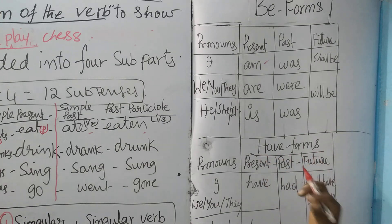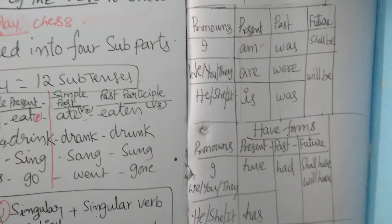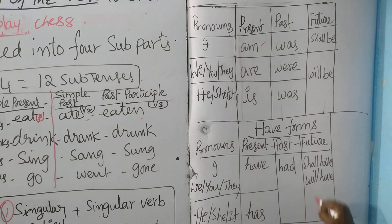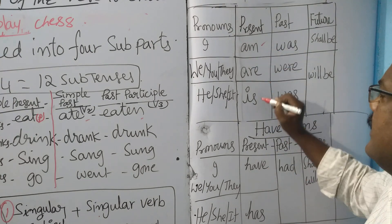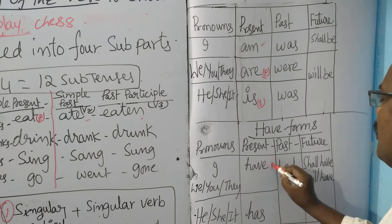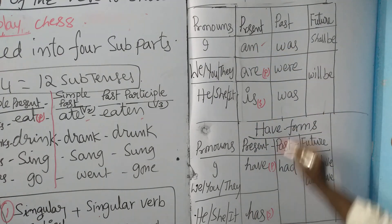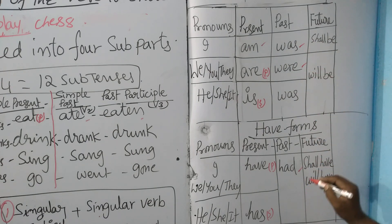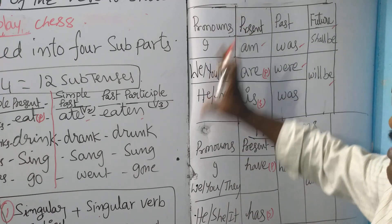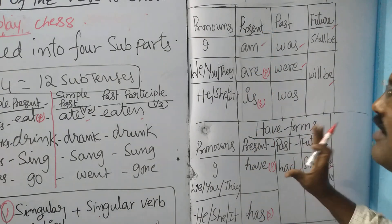Next, have forms also we have to know. Present have forms: have, has. Past have form: had. Future have forms: shall have, will have. 'Is' is a singular B form; 'are' is a plural B form. 'Have' is a plural have form; 'has' is a singular have form. So while dealing with present tense, these things we have to take into consideration.